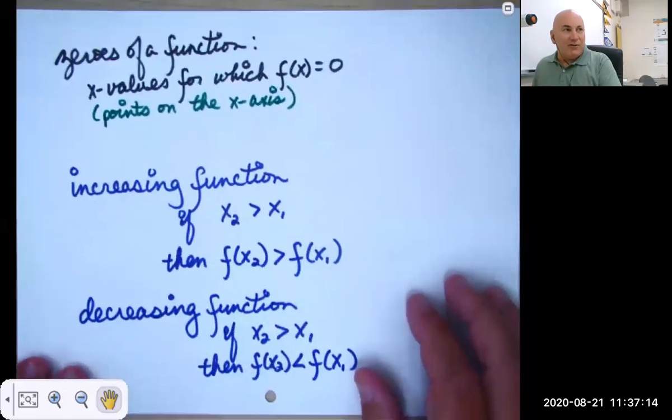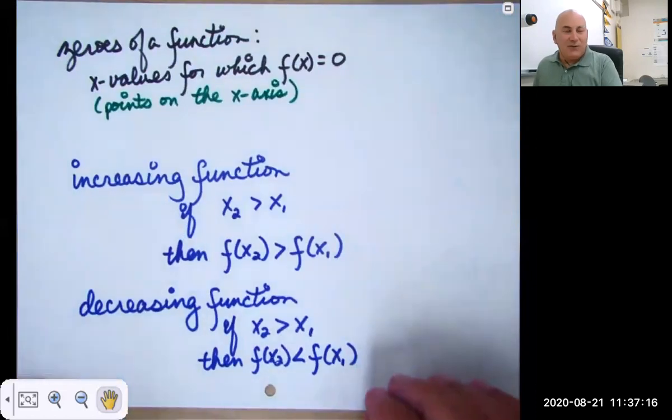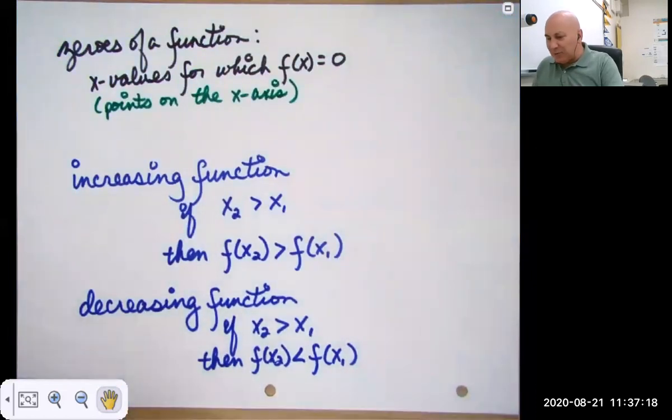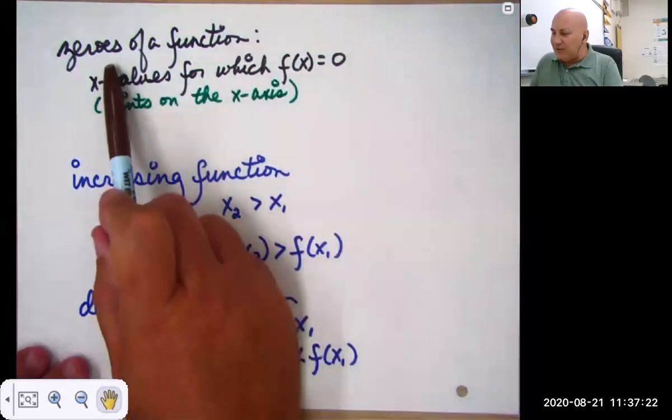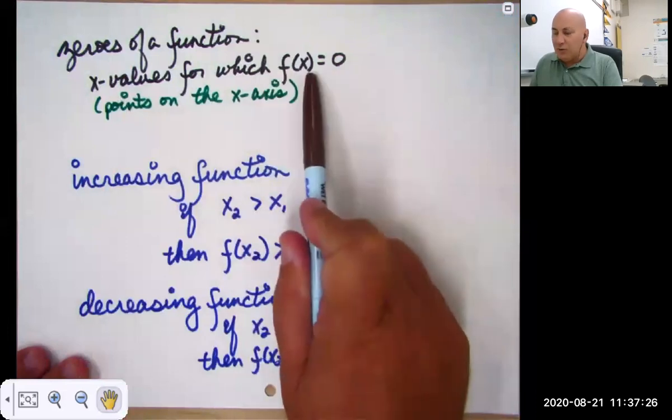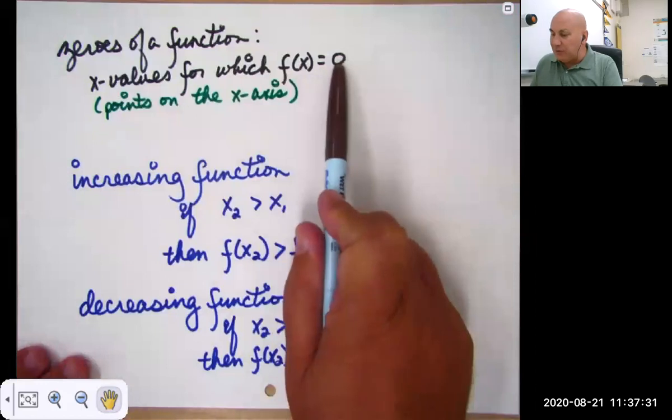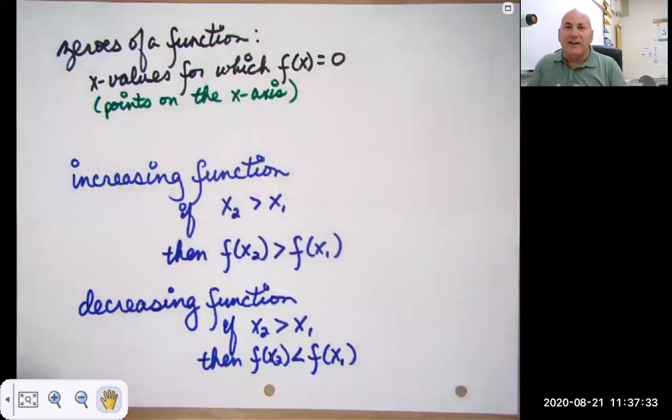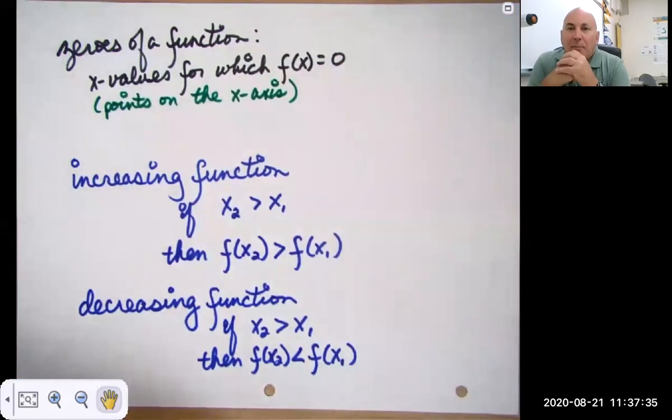We can talk about the zeros of a function. Now, what's funny is if we want to be really precise with our terminology. Functions have zeros. Those are the x values where the function value, which is the y value, equals zero. In other words, they're points on the x axis. Functions have zeros.